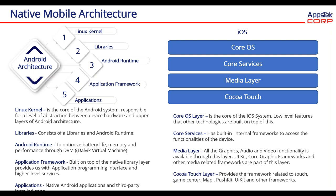The application framework is built on top of the native library layers, providing the application programming interface and higher-level services. The features of the Android operating system are available through APIs written in the form of Java classes, and Android developers use these high-level services to build applications. The application framework consists of key services like activity manager, resource manager, content manager, and many other components. On top of it, the applications layer is where all third-party and internal applications developed for the Android system are available.